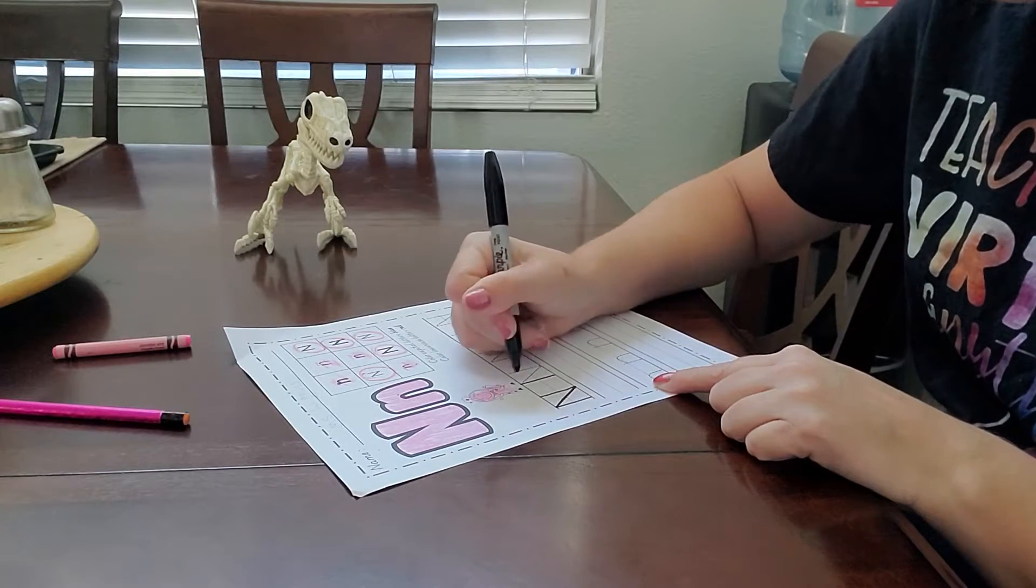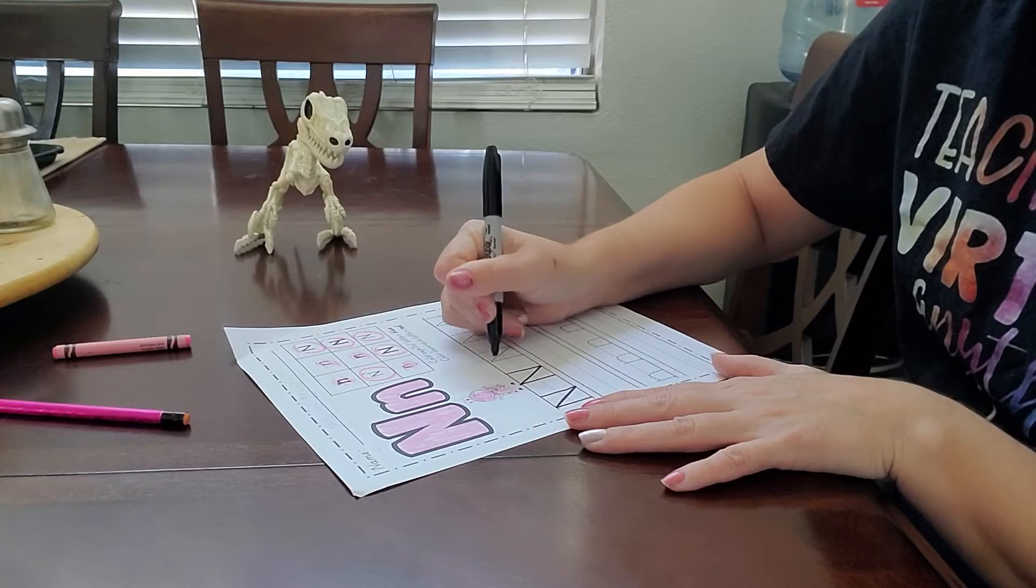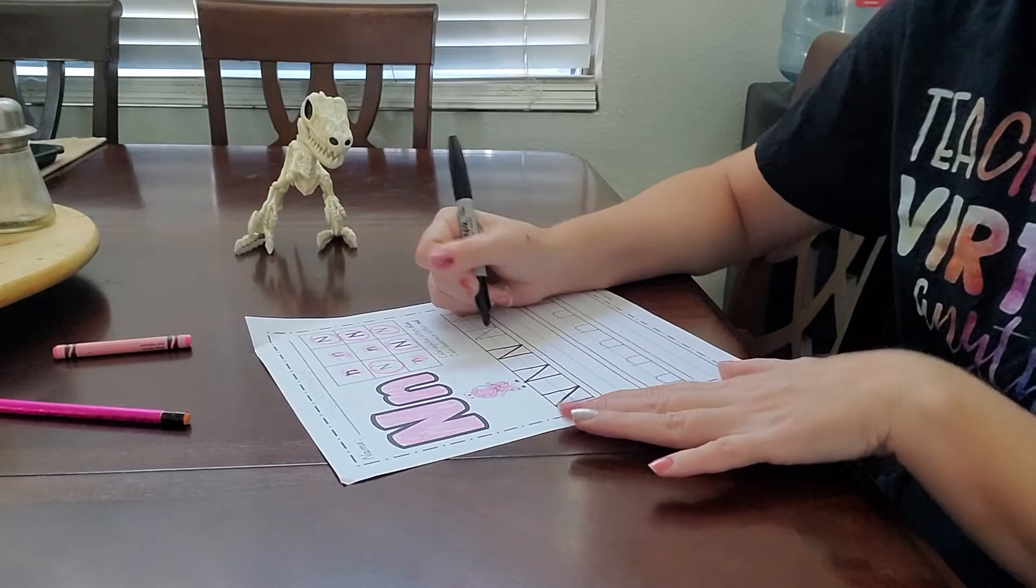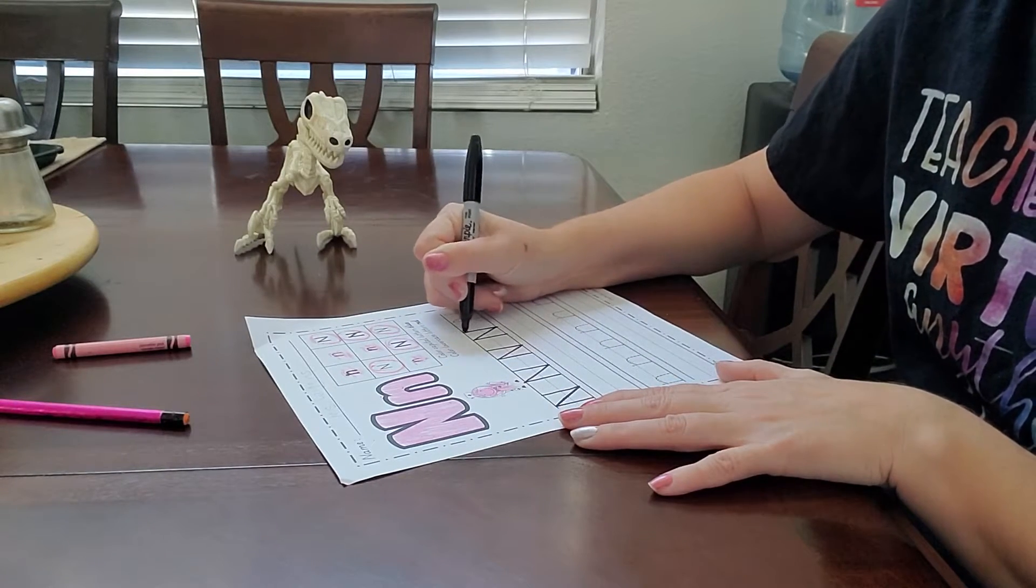So straight line down. Diagonal line. Straight line up. And then go ahead and trace these. Straight line down. Diagonal line down. Straight line up. Straight line down. Diagonal line down. Straight line up.